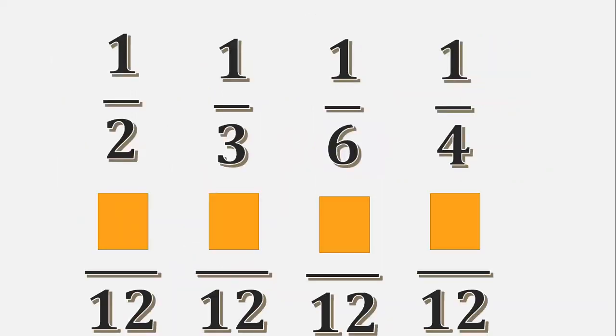Next, the LCD divided by the denominator of the previous fractions, and the quotient multiplied by the numerator. The product is the numerator of the similar fractions. Do the same process to the other fractions. One by one.